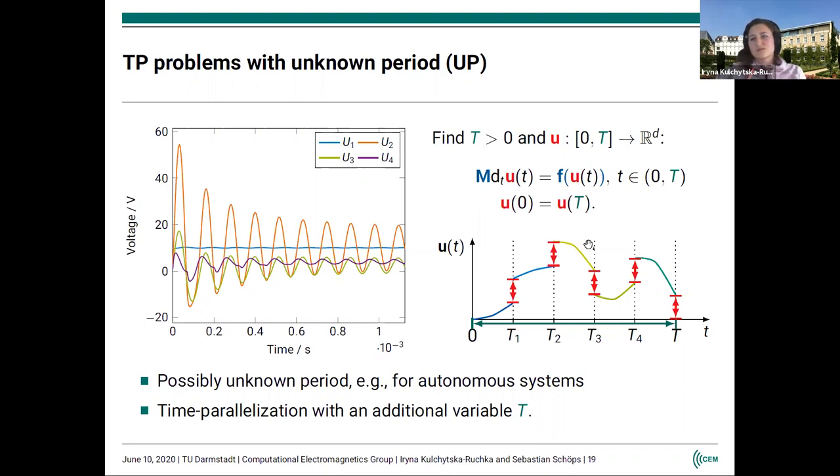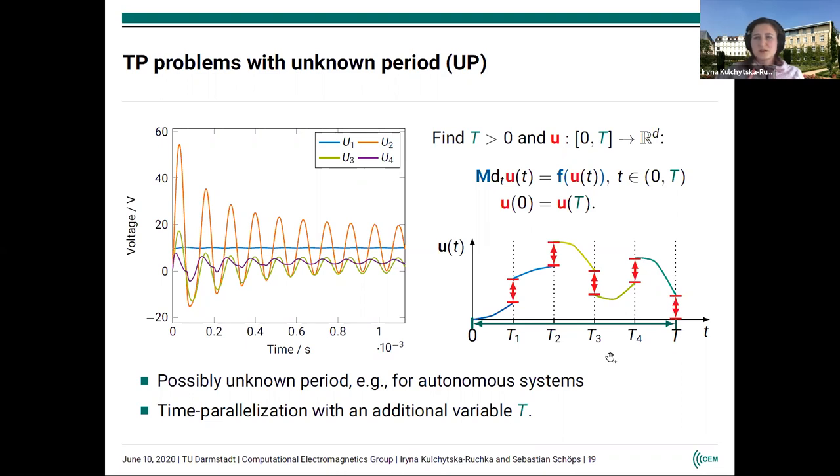In this case, we would like to solve the time periodic problem and include the period T as an additional variable. If we want to consider this again in the parallel-in-time framework, we would have to get rid of the jumps, the periodicity jump, and also somehow define the length of our interval to define the period that we consider. This could be done—this was actually already done by Deuflhard many years ago. It was considered within the multiple shooting framework. The first step is rescaling of your original time interval to the unit one, so that you won't need to change your partition every time you update your T.